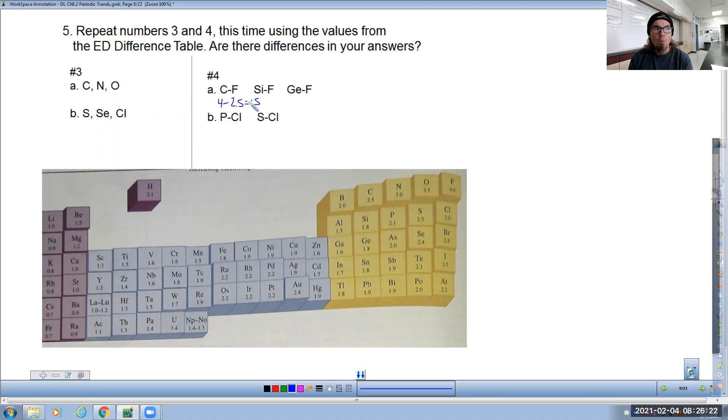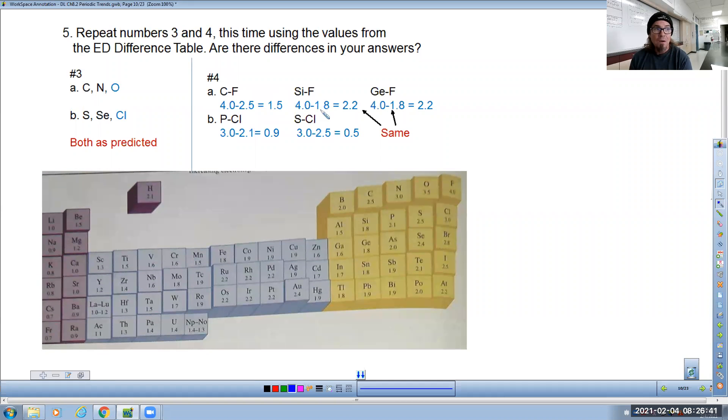In this case, 1.5. 1.5 is less than 1.67. So I'm going to assume that this is covalent, but because it is two different elements, it's really polar covalent. All of these are polar covalent. And we're just looking for the biggest difference in numbers. It turns out that silicon and germanium actually have the same electronegativity. And so you end up with the same values for those two.